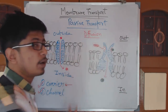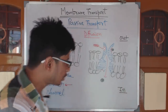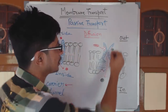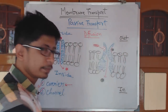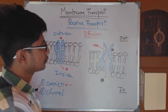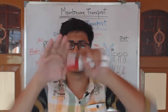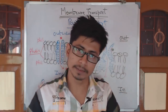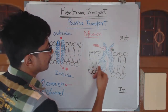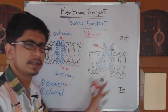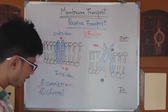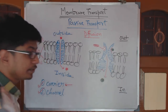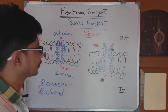Carrier proteins are mostly found in active transport, but there are also some carrier proteins in passive transport. For example, when sodium binds, the carrier changes its structure and sodium can come inside. Similarly, we have calcium channels and different ion channel proteins. If we go through carrier proteins and their different names, there are different varieties and types of carrier proteins.